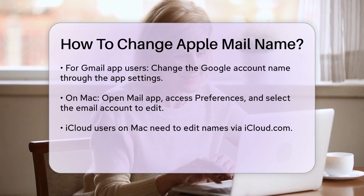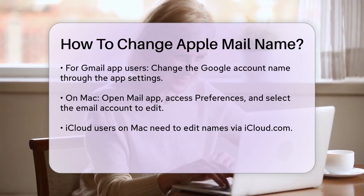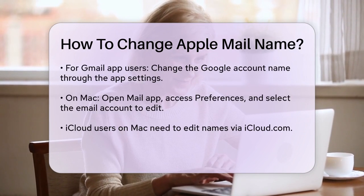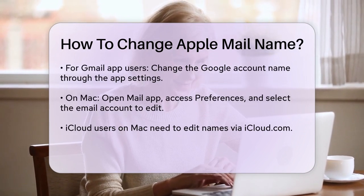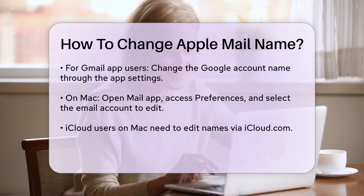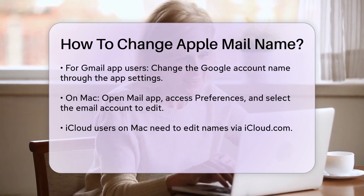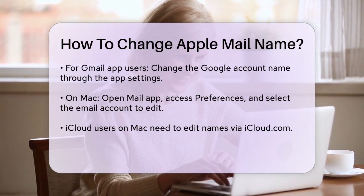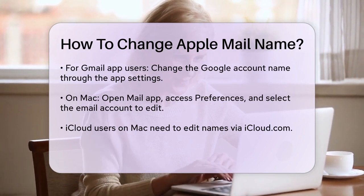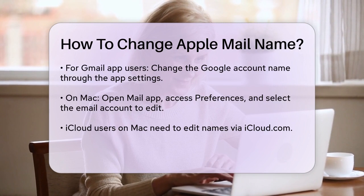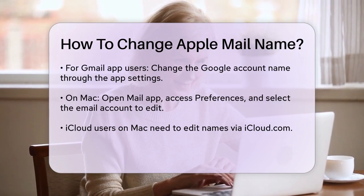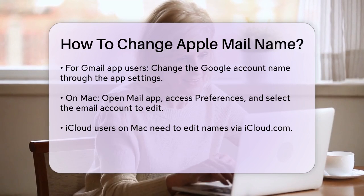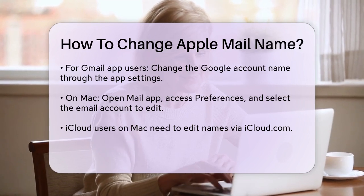On Mac, the process is a bit different. Open the Mail app and press Command, or go to Preferences from the menu bar. Click Accounts and select the email account you want to edit. For iCloud users, click the Email Address drop-down menu and select Edit Email Addresses. This will open iCloud.com in a web browser where you can edit your name. For other email services like Gmail, click the email address displayed in the Email Address drop-down, and then click Edit Email Addresses to change your name.